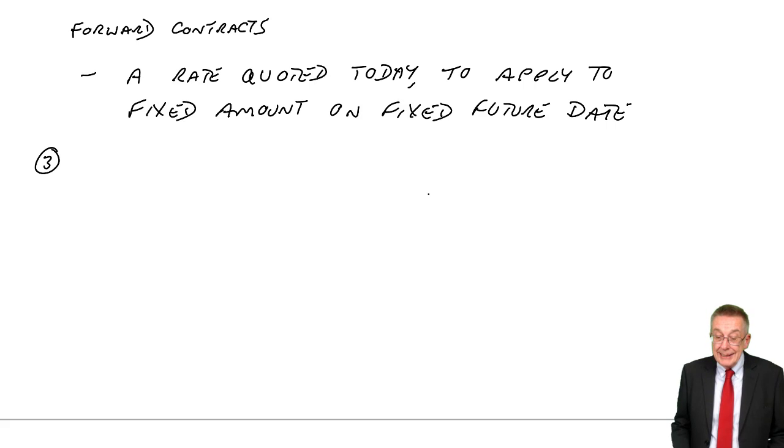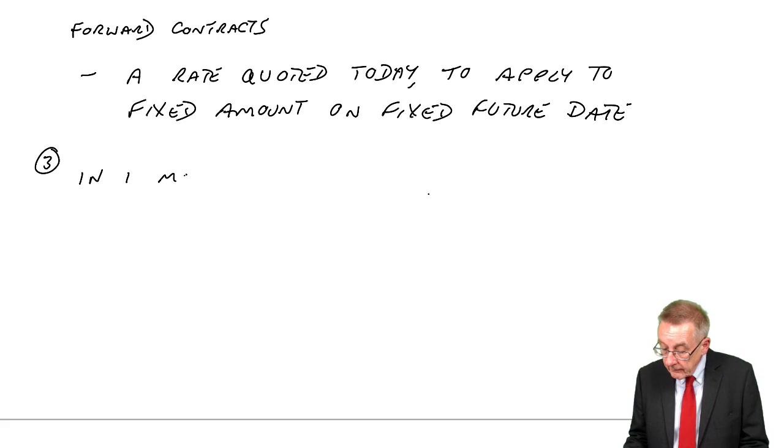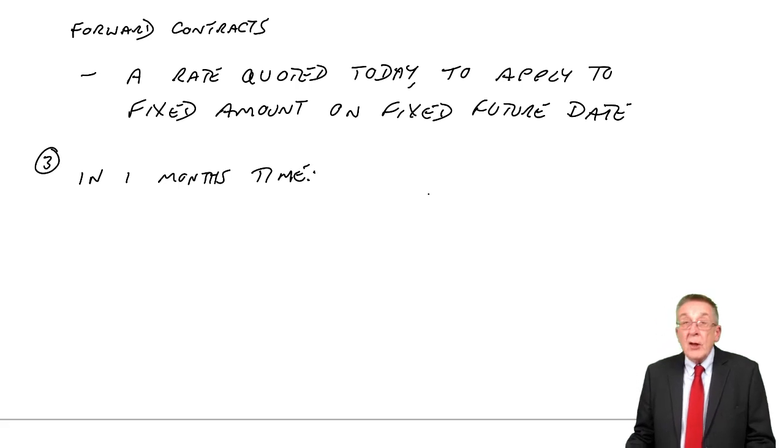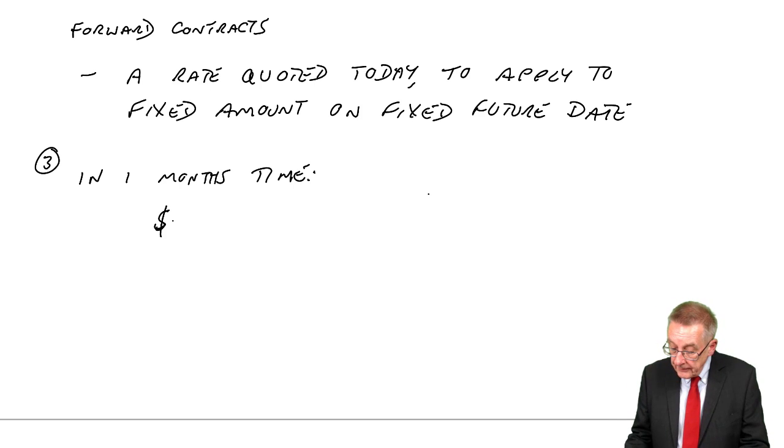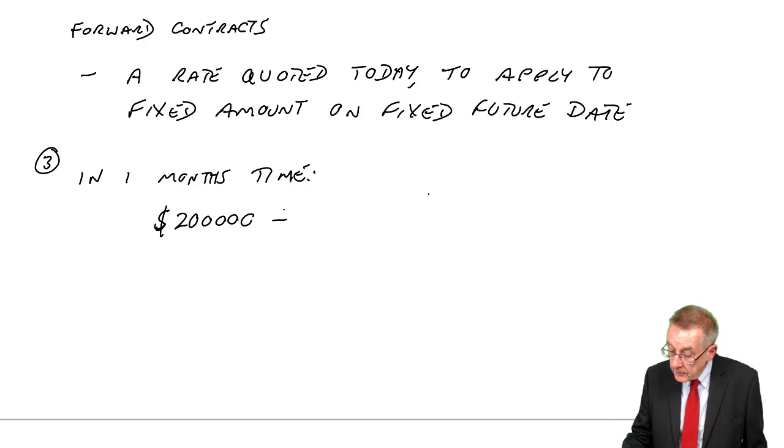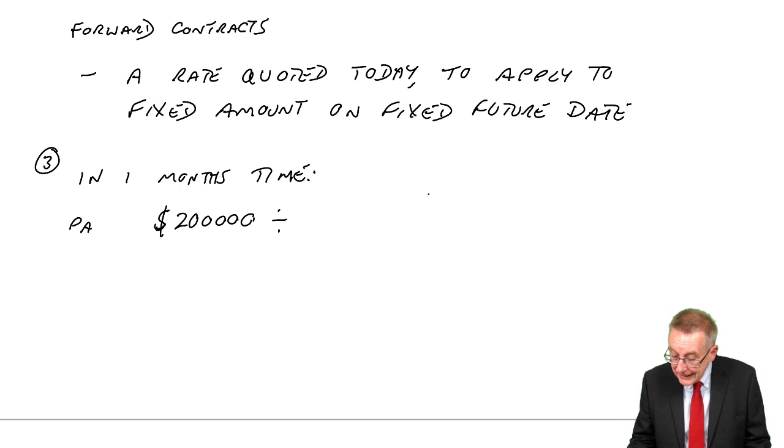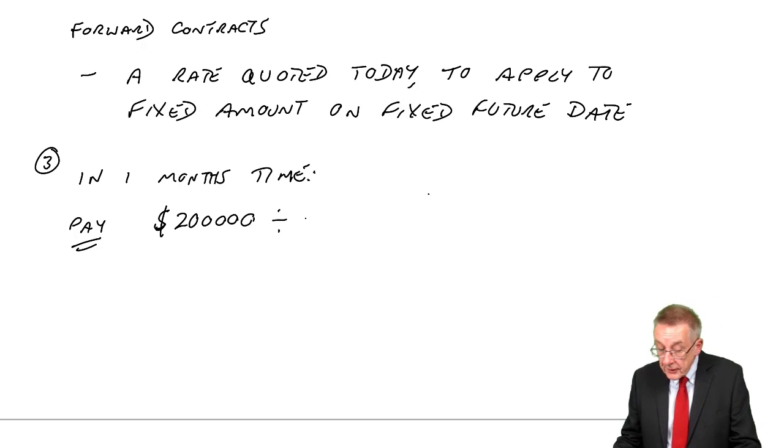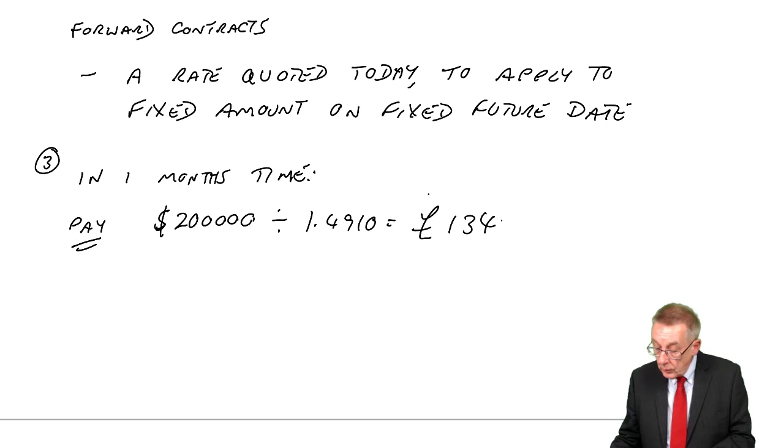If I agree to that quote, then we won't convert until one month. But in one month's time, we have to convert at the rate we've agreed today. How much is it? It's 200,000. It's quoted dollars to the pound, so we'll divide by the relevant rate. Since we're paying dollars, we'll need to buy dollars. We'll convert at the lower rate, 1.4910. So 200,000 divided by 1.4910 is 134,138.